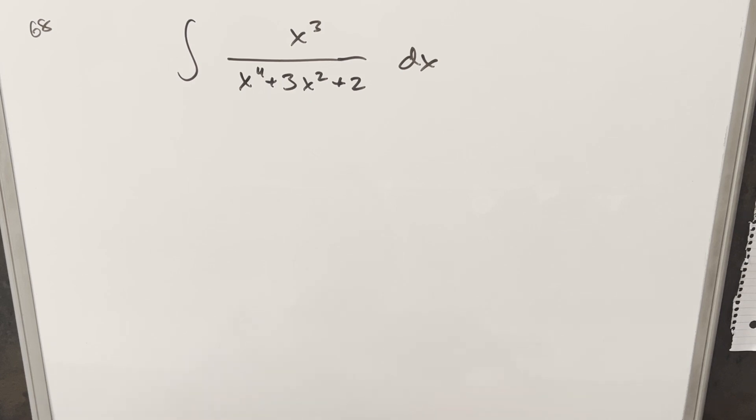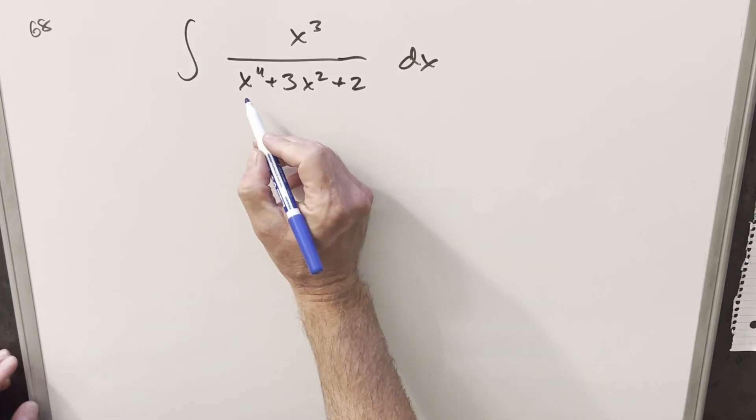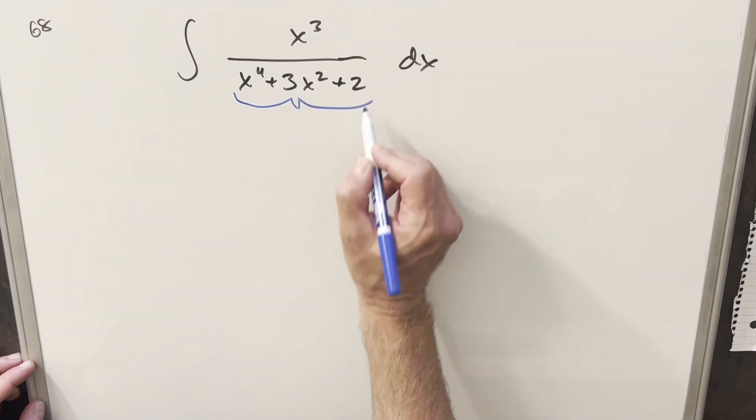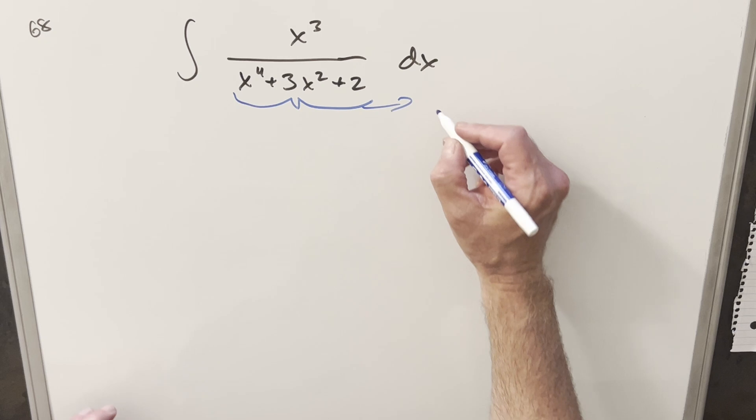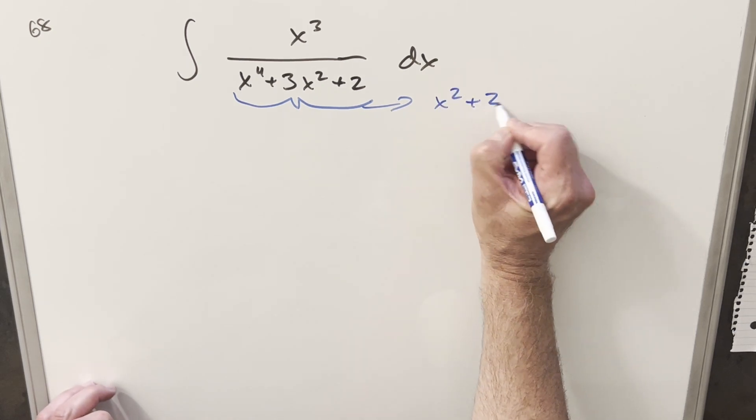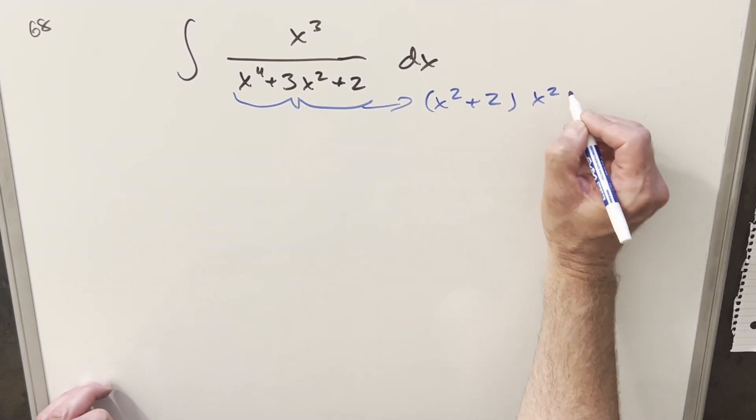Okay, so for this one, I think we can just do straightforward methods and set this up for partial fractions. But first, what I need to do is factor what we have here in the denominator. So the way I can factor this is going to be x squared plus 2 times x squared plus 1.